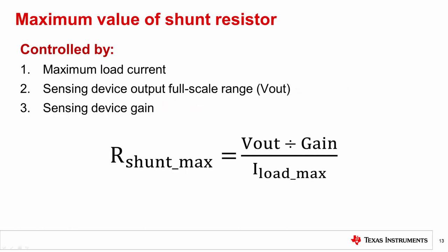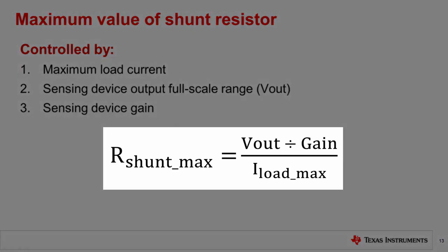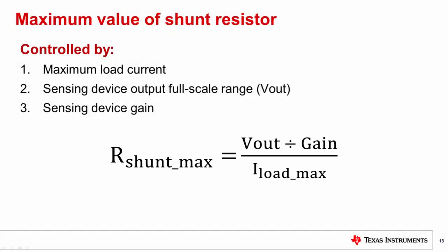The maximum shunt resistor value is calculated as the ratio of the full-scale output voltage of the amplifier divided by its gain, all divided by maximum load current. It should be noted that full-scale output range depends on the device supply and its output swing limitation.